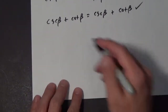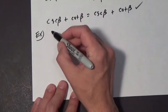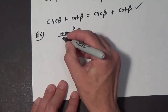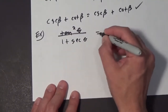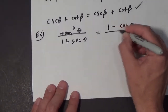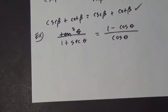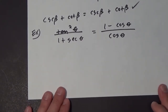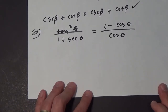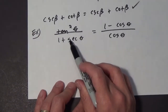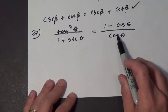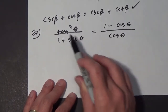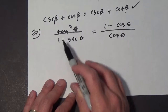Let's try another example. Let's verify the tangent squared of theta over 1 plus the secant of theta equals 1 minus the cosine of theta all over the cosine of theta. Now this is going to be an interesting technique. We've got to think about which side to choose, and I think what we're going to do is choose the left side. I'm going to show you another technique — I'm going to replace something with the tangent squared.